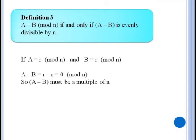Our third definition makes things even easier. It says that A is equivalent to B mod N provided that A minus B is evenly divisible by N. This is easy to see if you think about our last definition. If A is equivalent to B then both have the same remainder when divided by N. So say that A is equivalent to some remainder R and B is equivalent to the same remainder R, then A minus B would be equivalent to R minus R which is zero. Since A minus B is equivalent to zero then it has no remainder when you divide it by N. So A minus B must be divisible by N which means it's a multiple of N.